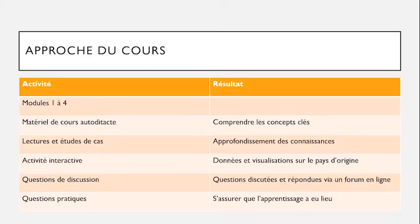L'approche du cours prévoit quatre modules. Nous vous fournirons du matériel autodidacte pour comprendre les concepts clés et réaliser différents exemples de modélisation. Grâce à ces matériels, vous pourrez vous approprier les concepts clés et réaliser des modèles basés sur la dynamique des systèmes. Nous aurons des lectures et des études de cas pour approfondir les connaissances, des activités interactives, et des exemples de données de pays réels ou fictifs.